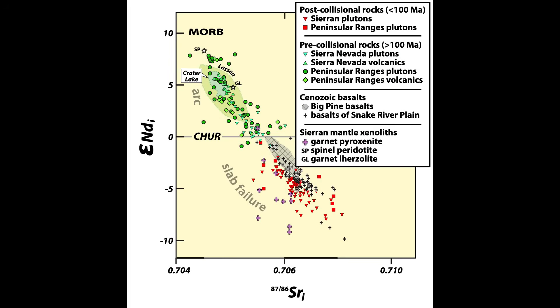This plot of initial epsilon neodymium versus initial strontium ratios compares the pre- and post-100 million-year rocks. Note that the pre-100 million-year arc rocks shown in green symbols generally plot above CHUR, or Chondritic Uniform Reservoir, whereas the post-100 million-year rocks shown in red plot below it. Arc rocks generally plot above CHUR, as illustrated by the fields for Lassen Volcano and Crater Lake of the Cascade Volcanic Arc. Likewise, mid-Cretaceous spinel peridotite and garnet lherzolite xenoliths brought to the surface in the Sierras by Miocene diatremes also plot with the arc rocks.